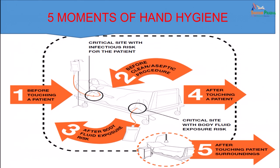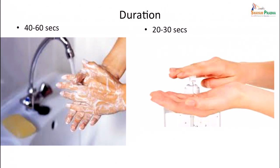WHO has identified five moments of hand hygiene when near a patient: first, before touching the patient; second, before a clean or aseptic procedure; third, after exposure to patient fluids; fourth, after touching the patient; and fifth, after touching patient surroundings. As for duration, hand washing with soap should be 40 to 60 seconds, and 20 to 30 seconds when using an alcoholic rub.